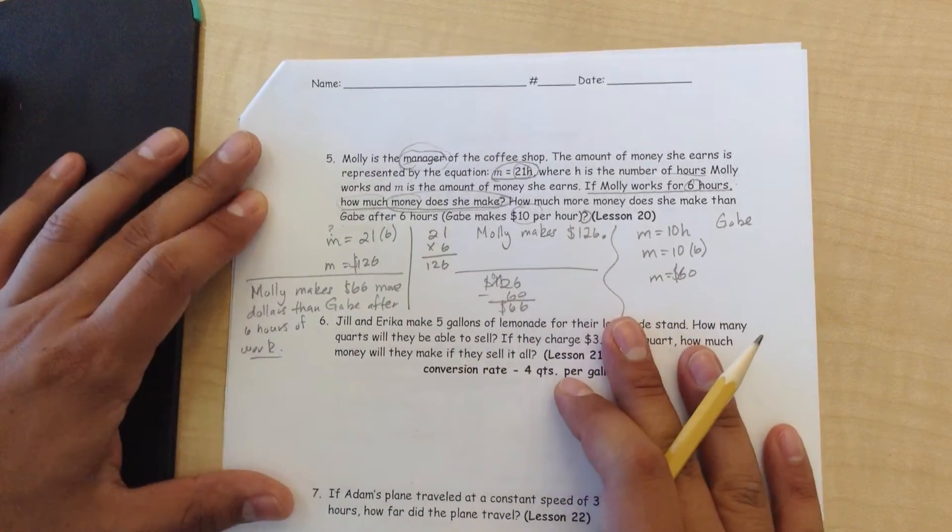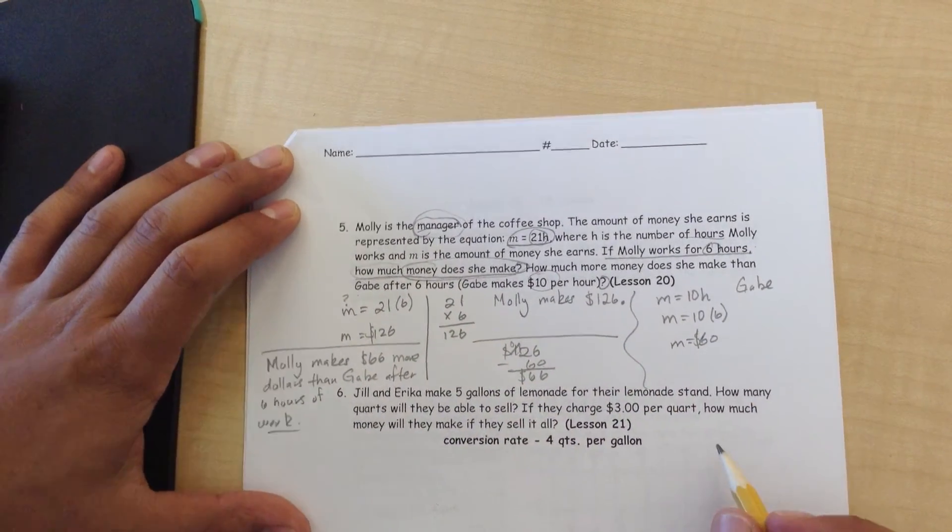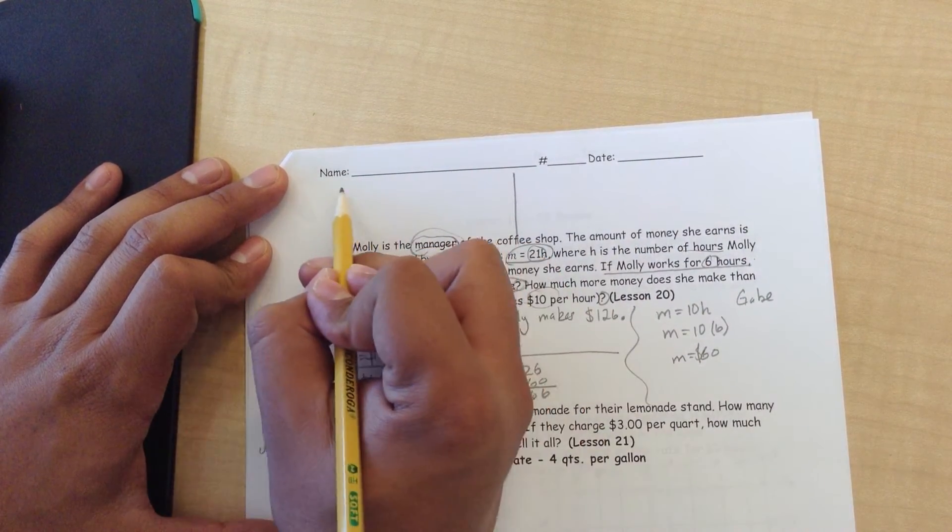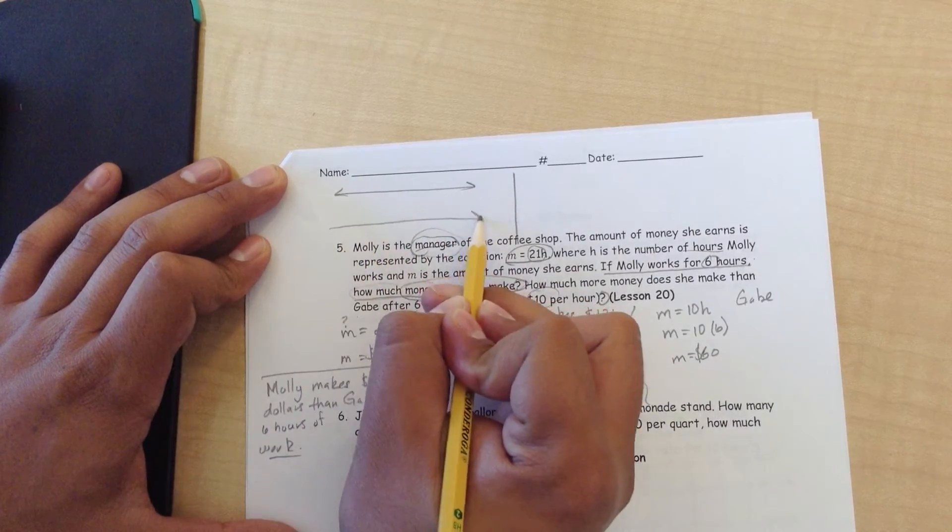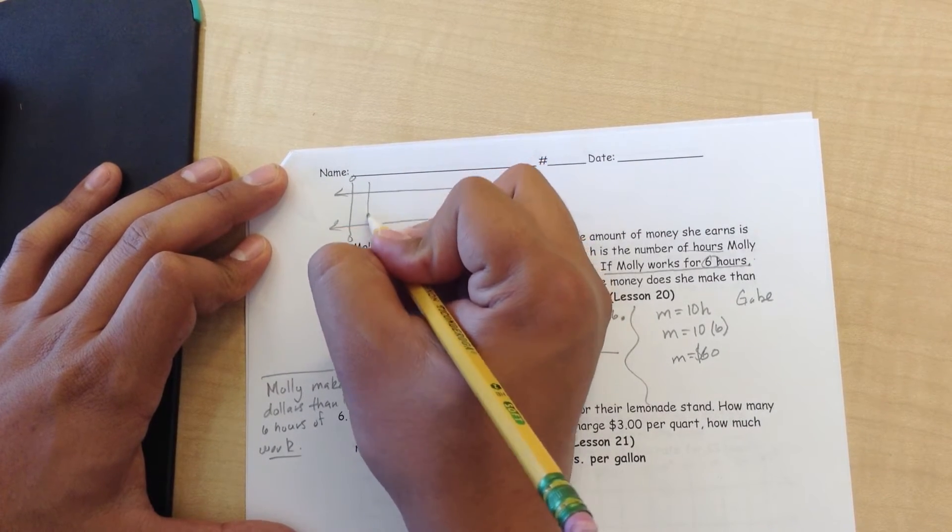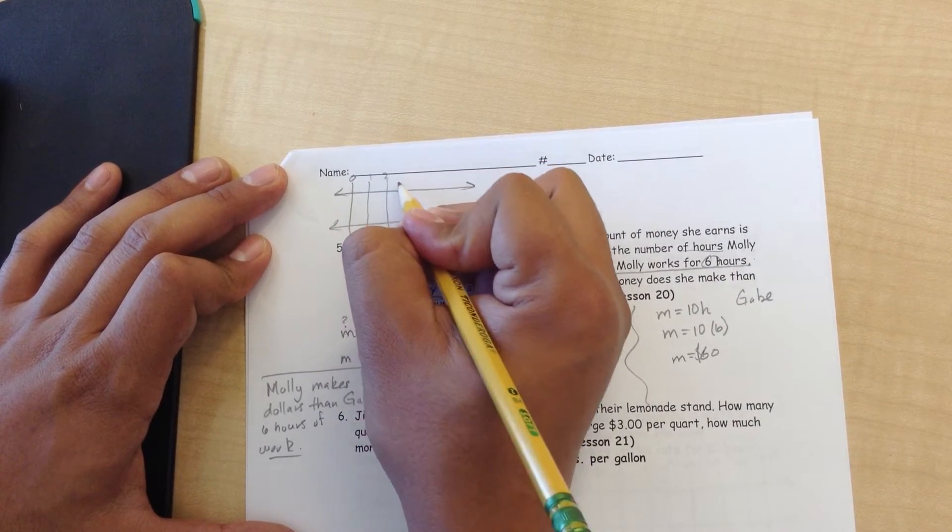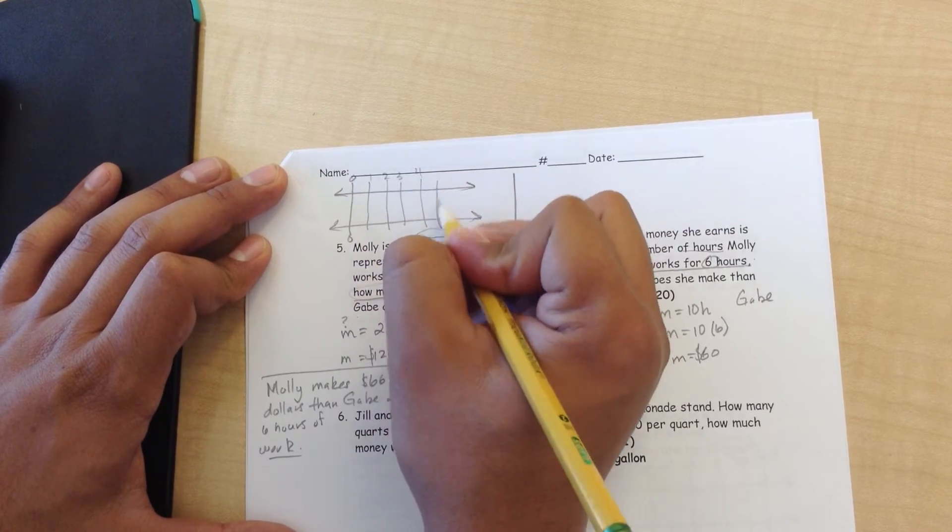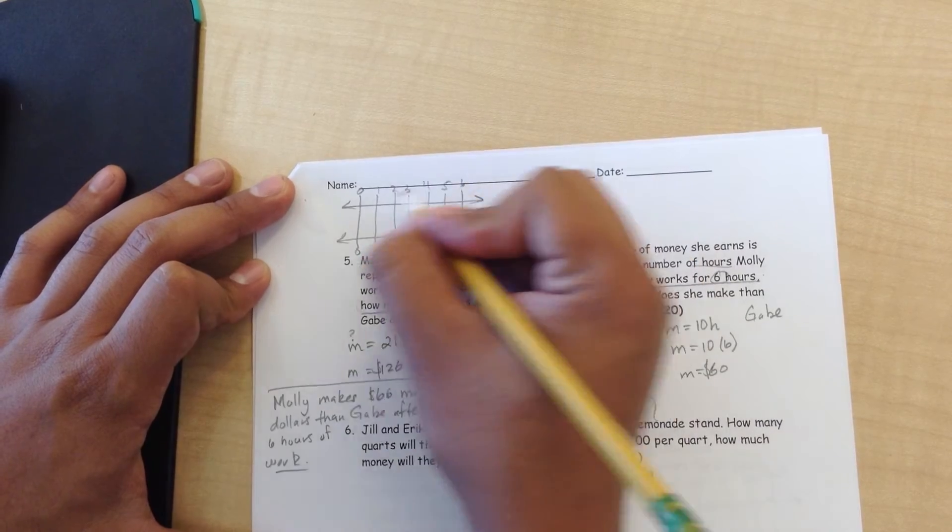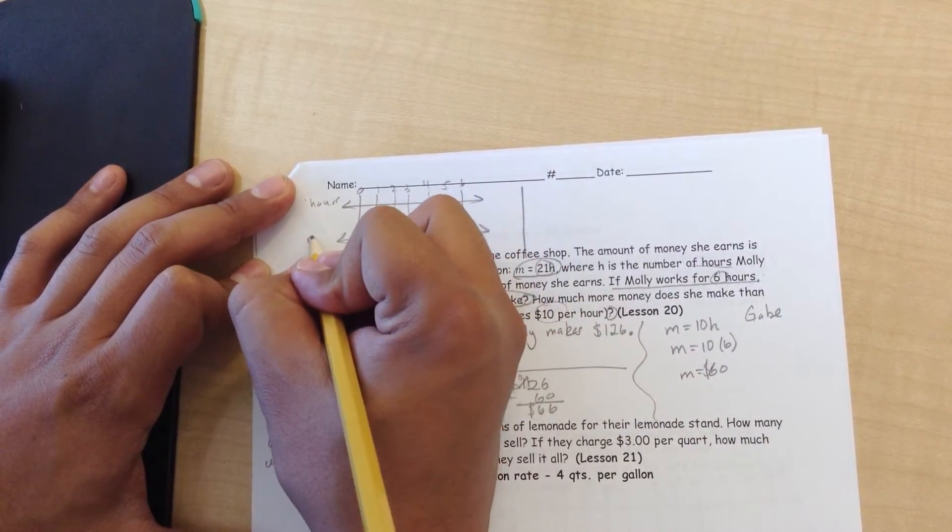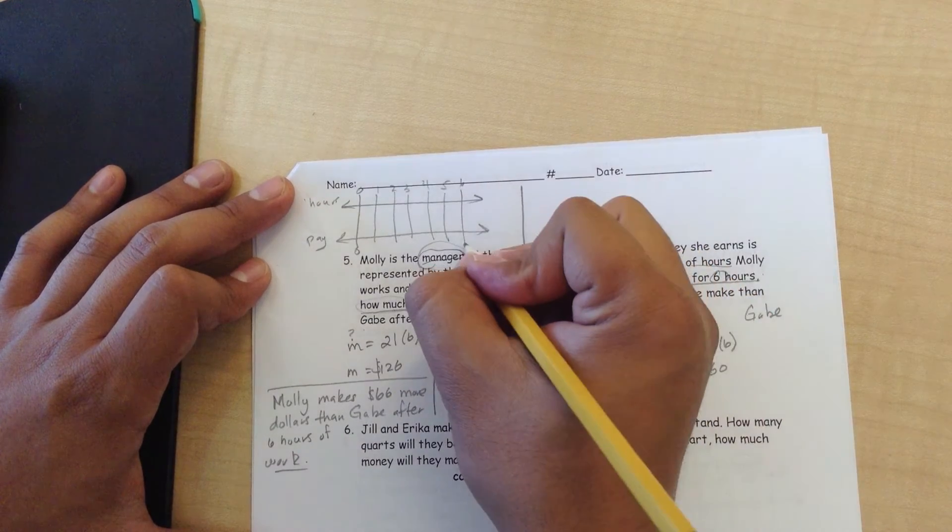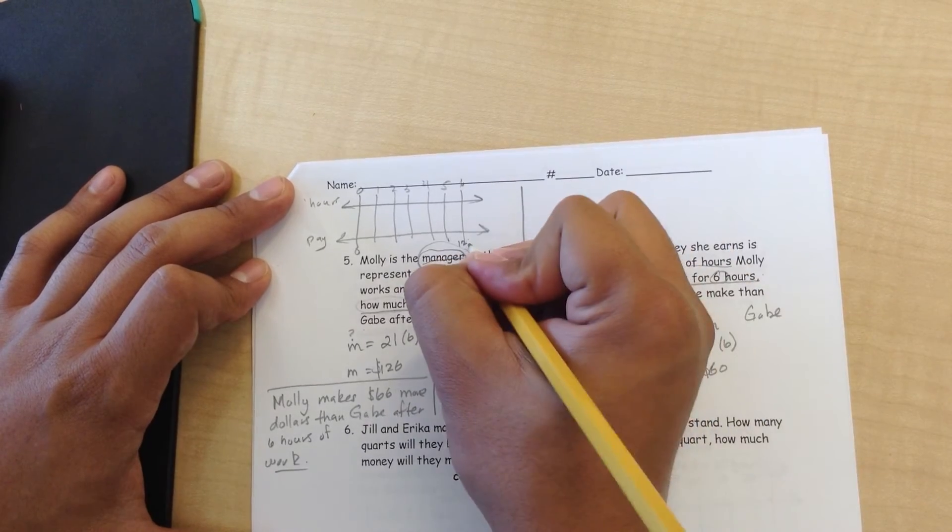Now, if we wanted to show that in the model, let's go ahead and look at it up here. If we wanted to model what Molly makes, put our zeros. 1, 2, 3, 4, 5, 6 hours and pay. You know, for 6 hours, she'll make $126.